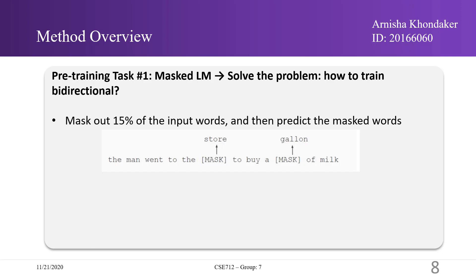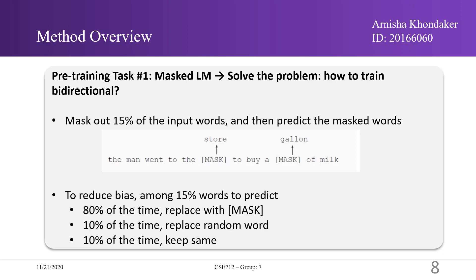Although this allows obtaining a bidirectional pre-trained model, a downside is that it creates a mismatch between pre-training and fine-tuning, since the mask tokens do not appear during fine-tuning. To mitigate this, the masked words are not always replaced with the actual mask token. The training data generator chooses 15% of token positions at random for prediction. If the i-th token is chosen, it is replaced with the [MASK] token 80% of the time, a random token 10% of the time, and an unchanged token 10% of the time.